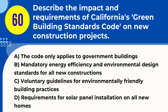Question 60. Describe the impact and requirements of California's Green Building Standards Code on new construction projects. A. The code only applies to government buildings. B. Mandatory energy efficiency and environmental design standards for all new constructions. C. Voluntary guidelines for environmentally friendly buildings. D. Requirements for solar panel installation on all new homes. Answer: B. Explanation. California's Green Building Standards Code, also known as CalGreen, imposes mandatory energy efficiency and environmental design standards on all new construction projects. These requirements aim to reduce environmental impact and promote sustainable building practices.